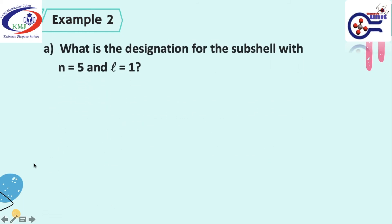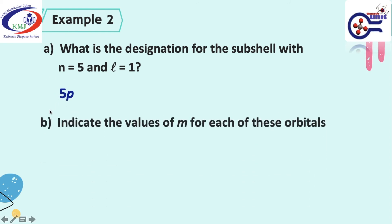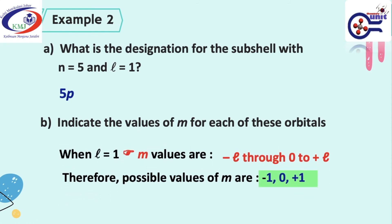Example 2: What is the designation for the subshell with n equal to 5 and l equal to 1? Since l equal to 1 is a p orbital, the designation for the subshell is 5p. Indicate the values of m for each of these orbitals. When l is equal to 1, the m values range from negative l to positive l. Therefore, the possible values of m are negative 1, 0, and positive 1.